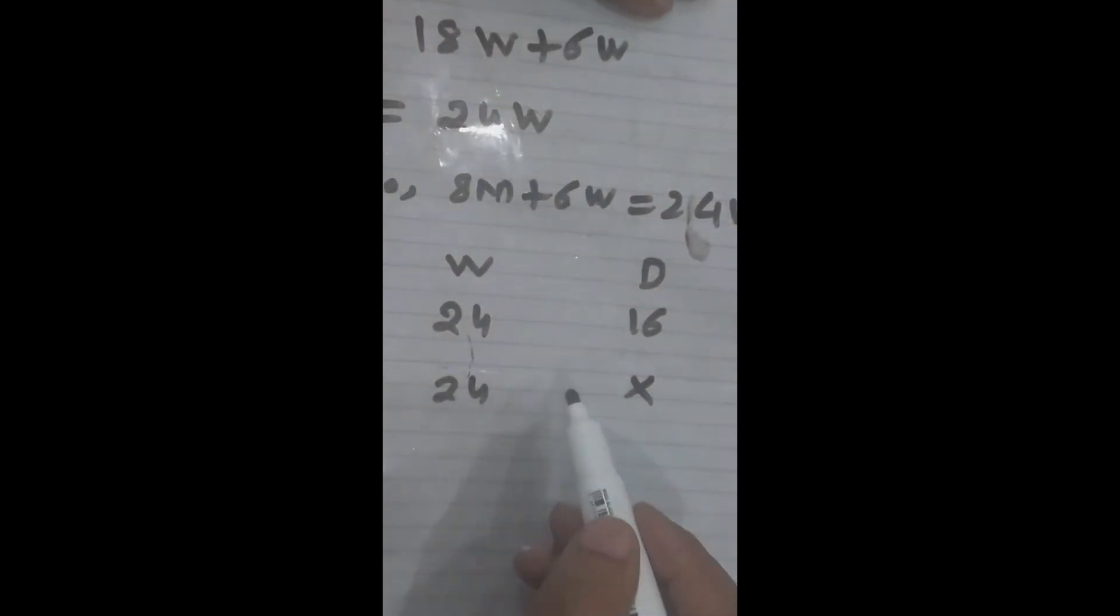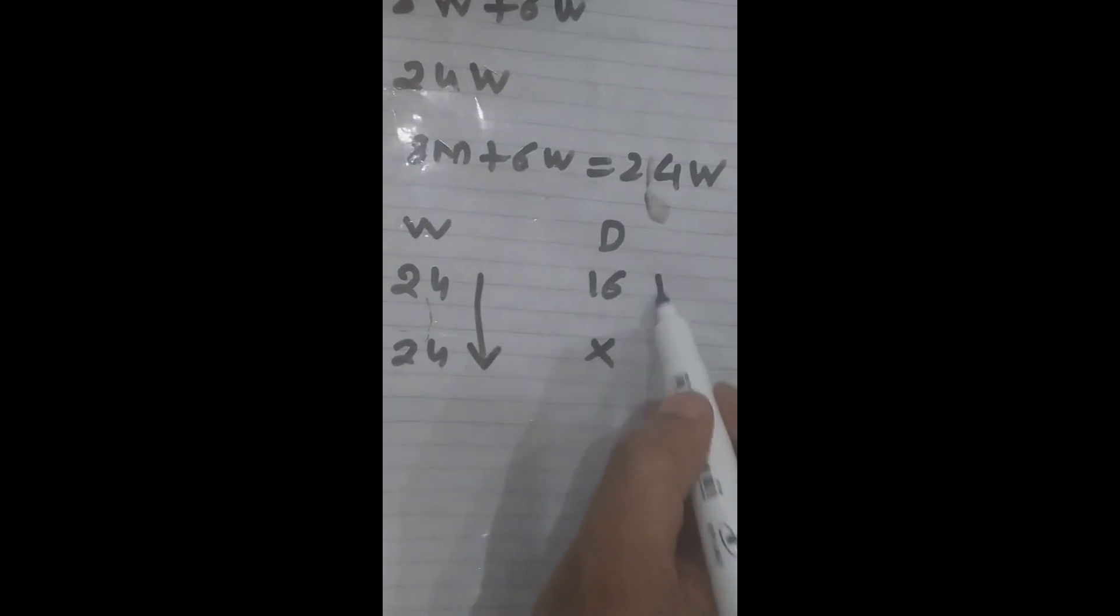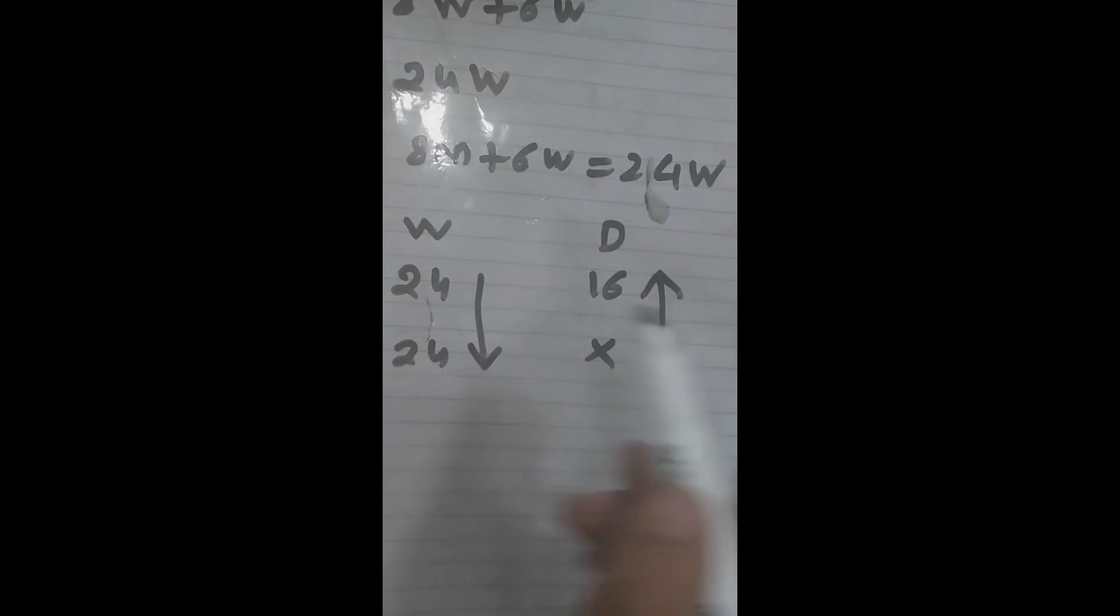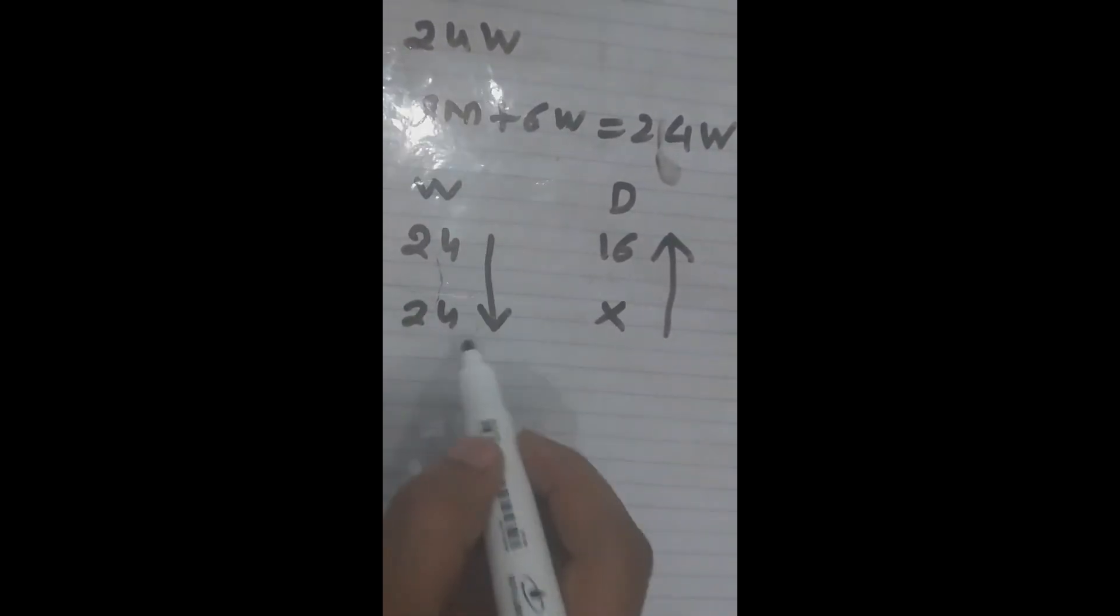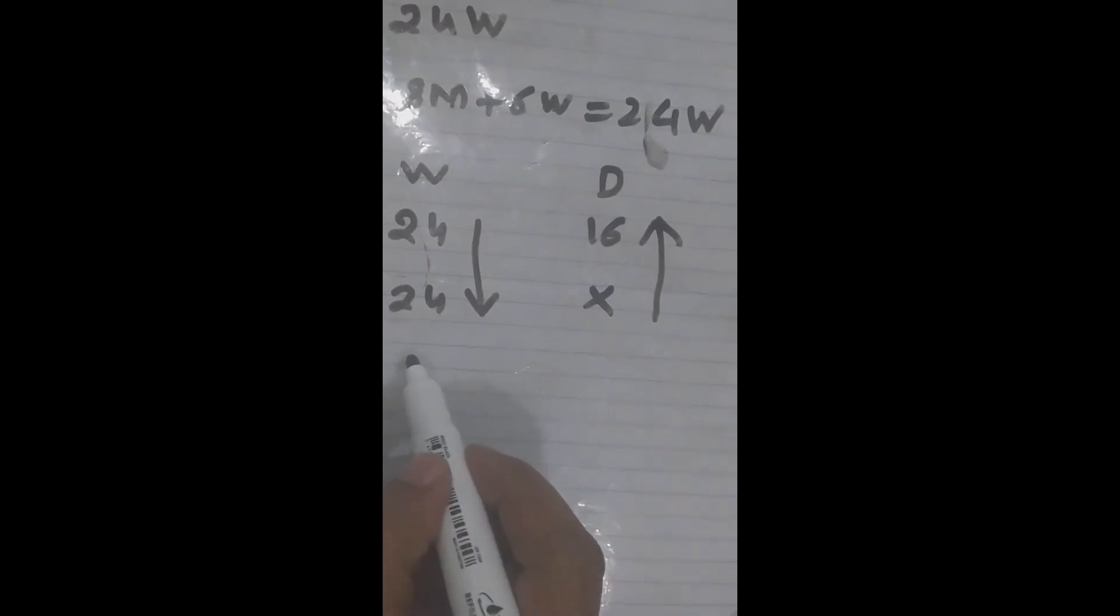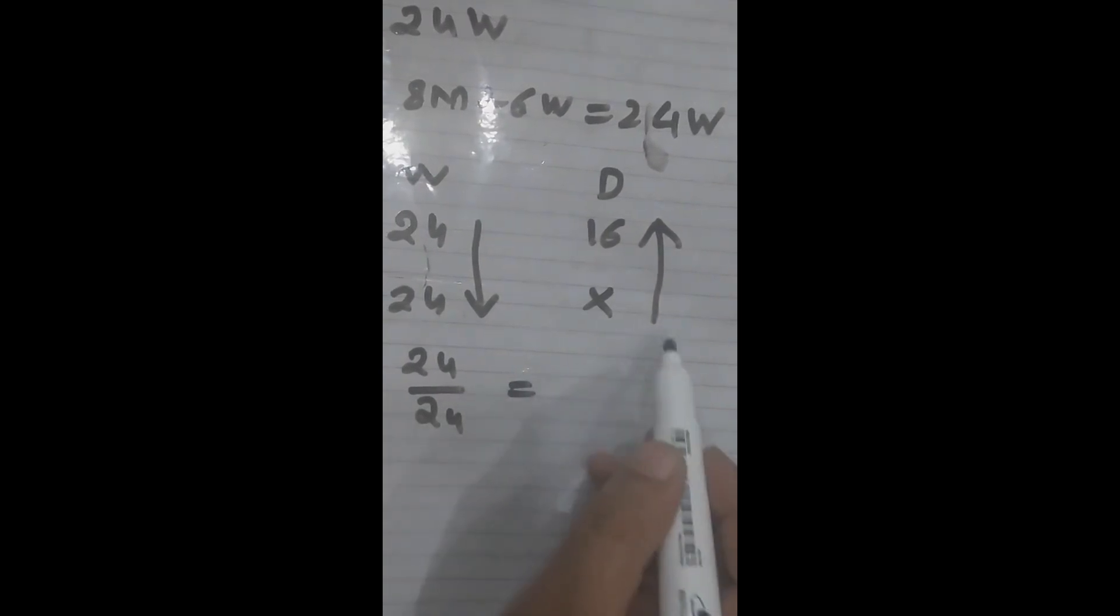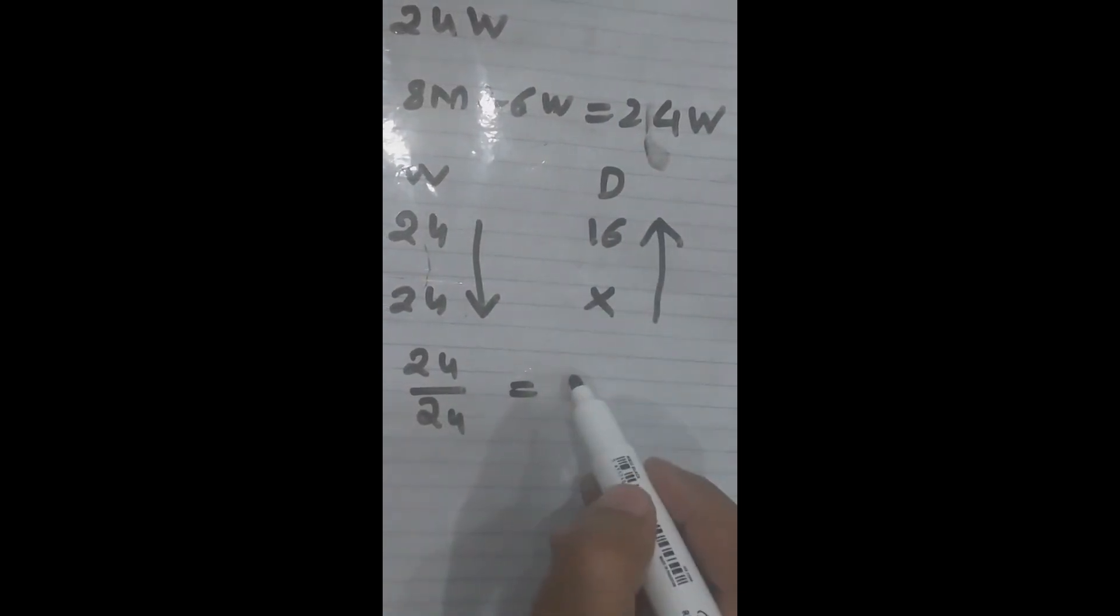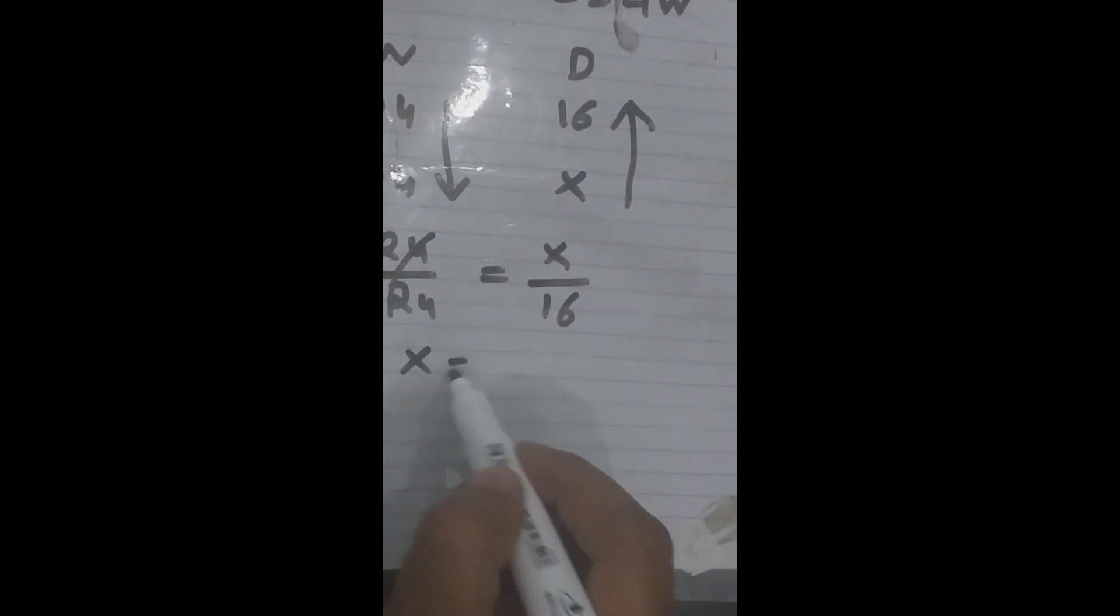Here this is the problem of inverse proportion. We randomly put two arrows here and up here because this is inverse proportion. If the number of women increase, the number of days will decrease. So from tail to head we write this fraction: 24 by 24 equal to, from this tail up to the head, x over 16. Now simply we get x equal to 16.